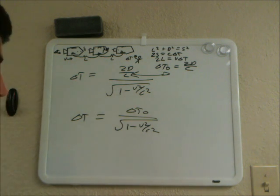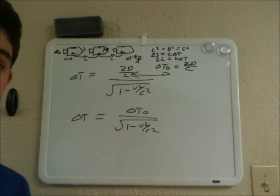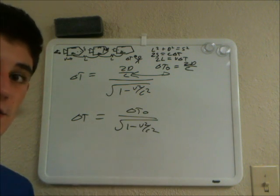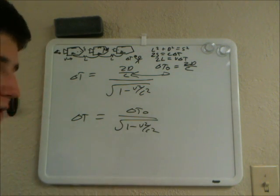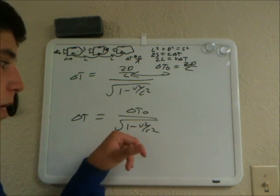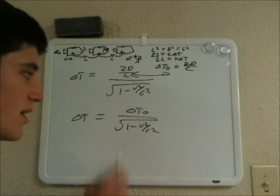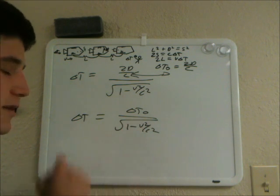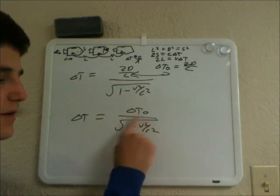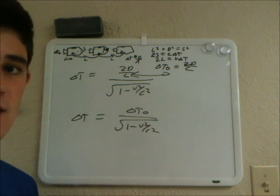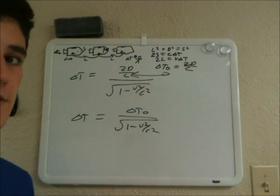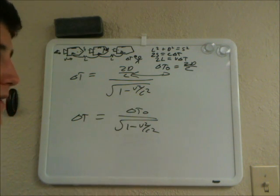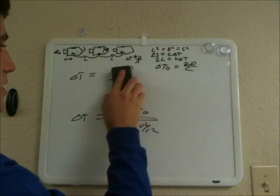What this means essentially is that since velocity will never equal or exceed the speed of light, the value of V over C will always be a fraction less than 1. Squaring it is still less than 1. One minus that is still less than 1. The square root of that is still less than 1. So you have delta T naught divided by a number less than 1, giving a larger delta T. For example, if delta T naught is 10 seconds and the factor is 0.8, then delta T equals 10 over 0.8, which is more — that is time dilation.